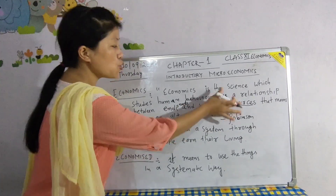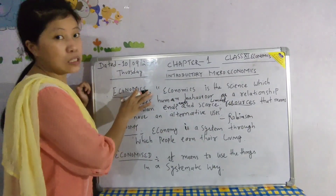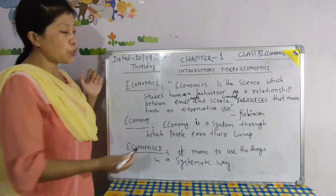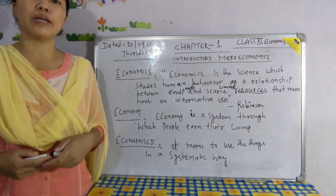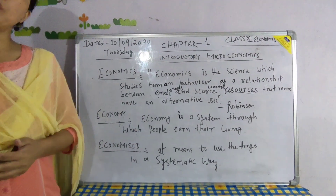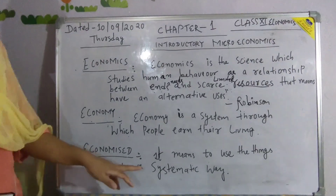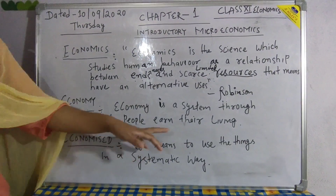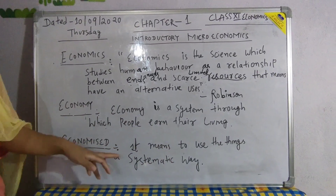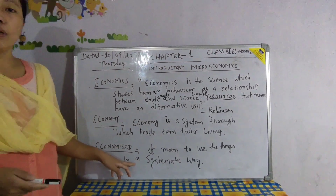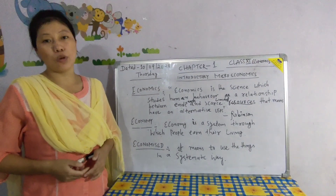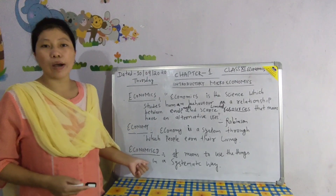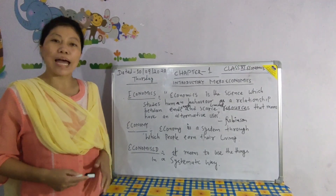The first related term is economy, which is the system through which people are living. And the next term is economize, which means to use things in a systematic way — whether it may be resources, capital, or food — to use in a systematic way. So these two words, economy and economize, seem to be the same but have different meanings.